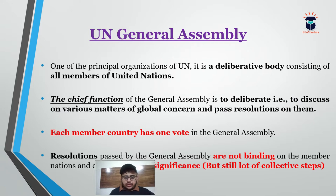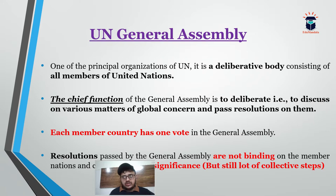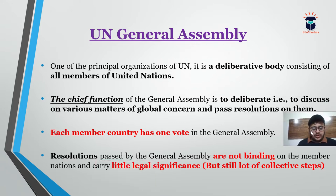The UN General Assembly is one of the principal organs of the UN and is a deliberative body consisting of all members of the United Nations. All member countries constitute this larger body. Each member country has one vote in the UN General Assembly — so for example, India has one vote, and similarly all other countries each have one vote.